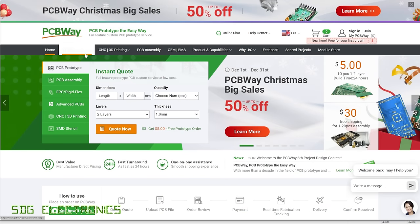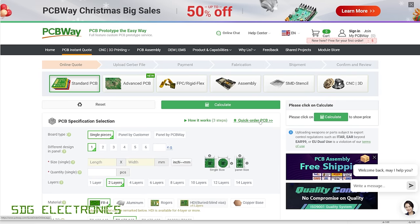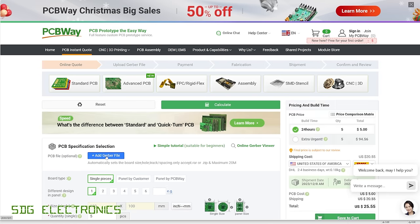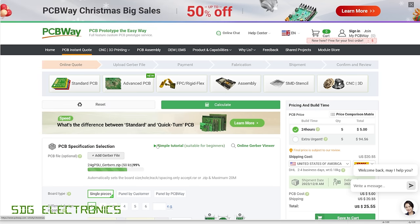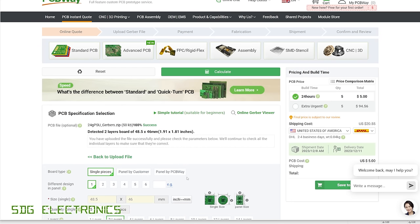Here we are at PCBWay.com. We click on quick order PCB, we can upload our gerber files at this point. Click add gerber file, and then we've got the 24 gigahertz PSU gerbers.zip. Then it should load.